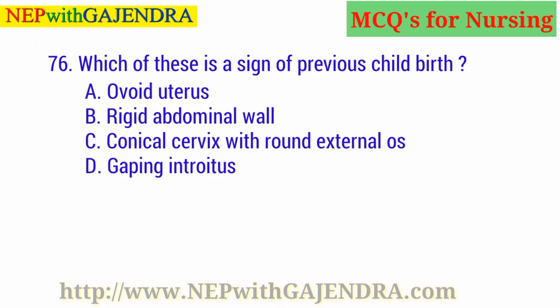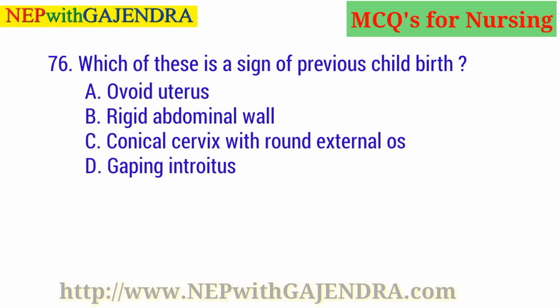Which of these is a sign of previous childbirth? A. Hard-wall uterus. B. Flabby abdominal wall. C. Conical cervix with round external os. D. Gaping introitus. The right answer is D: Gaping introitus.